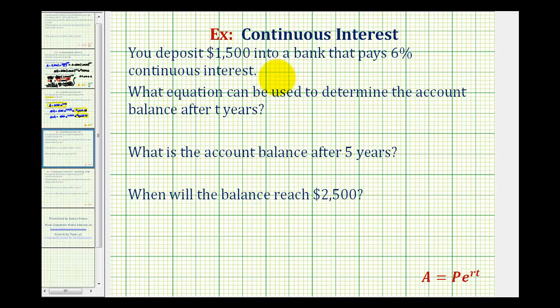You deposit $1,500 into a bank that pays 6% continuous interest. What equation can be used to determine the account balance after t years? What is the account balance after five years? And when will the account balance reach $2,500?